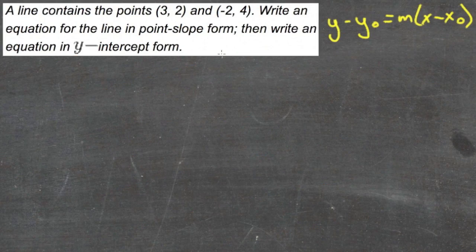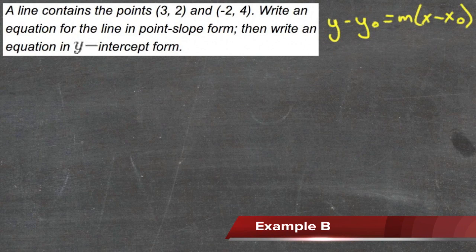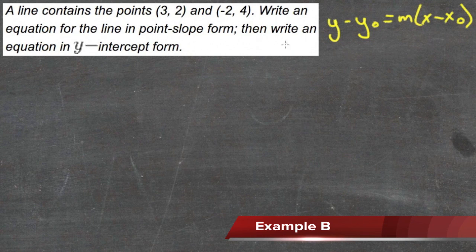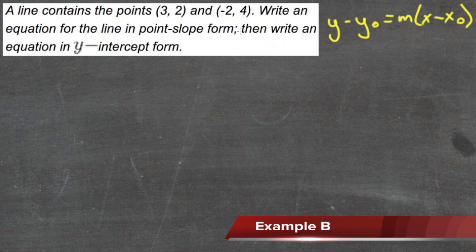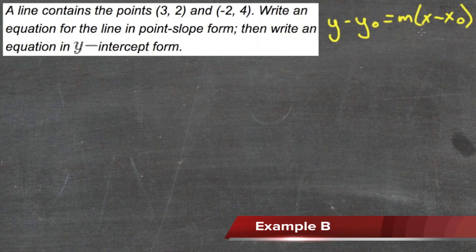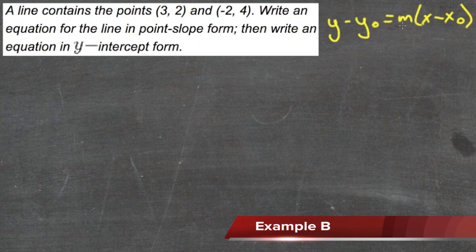A line contains the points (3, 2) and (-2, 4). We need to write an equation for the line in point-slope form and then write an equation in y-intercept form. Now for either form we're going to need to know m and we're not given it in the problem. So the first thing we'll do is take a look at the point-slope form and see if we can solve it for m to get the value that we're missing.